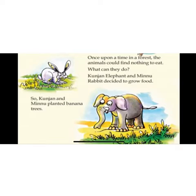In a forest, the animals were born. The animals could find nothing to eat. What can they do? Kunjan the elephant and Minnu the rabbit decided to grow food. So Kunjan and Minnu planted banana trees.